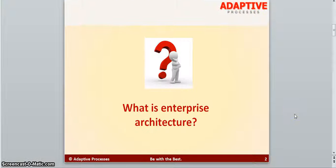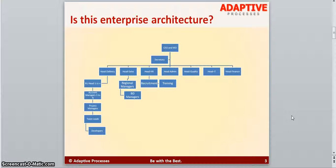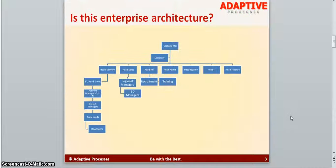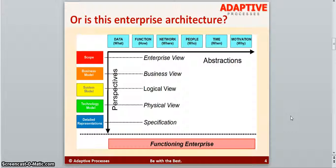If I ask the simple question 'what is enterprise architecture,' we may receive many different answers. For example, in typical business analysis books you will see an enterprise organizational model — a CEO and MD at the top, then heads of delivery, sales, and HR, and so on down to developers. Some people describe something more detailed following the Zachman framework — scope, business model, system model — but still nothing beyond technology.